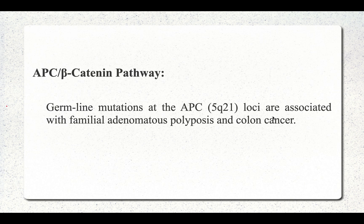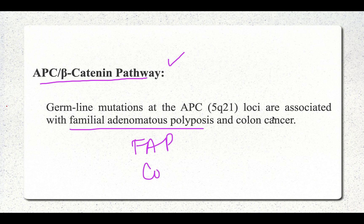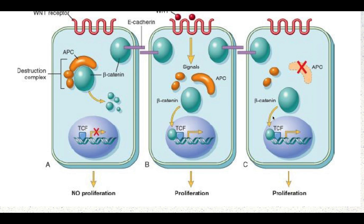The next pathway is the APC/beta-catenin pathway, associated with familial adenomatous polyposis (FAP) syndrome and colon cancer. Normally in the cell, a WNT receptor is present. APC is bound to beta-catenin in the normal cell, and there is no cell proliferation taking place.